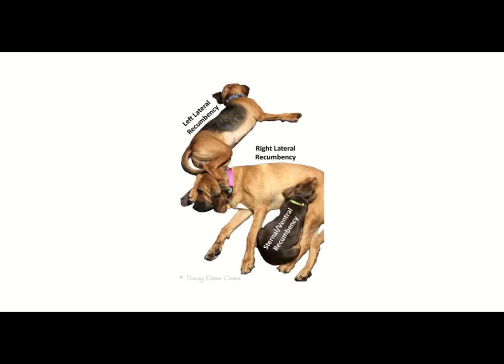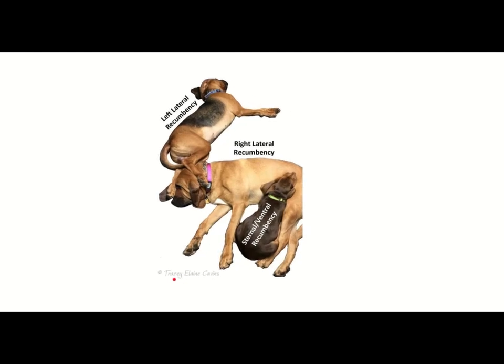Here's a creative slide with three dogs labeled with recumbency positions. The dog up top is in left lateral recumbency — the left side of the animal is on the floor and it's lying down. The bloodhound has right lateral recumbency — it's lying on its right side. Then there's something we don't see in print very often: sternal or ventral recumbency, where the animal is lying on its chest, its sternum. Good job to whoever made this — it's a great review of these terms.